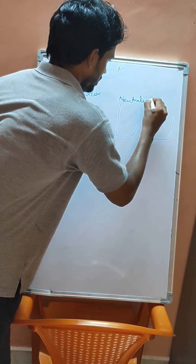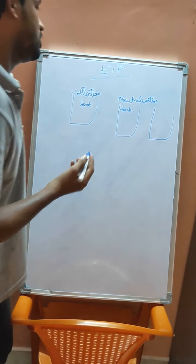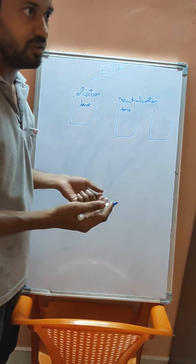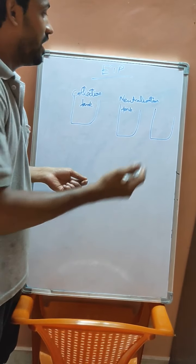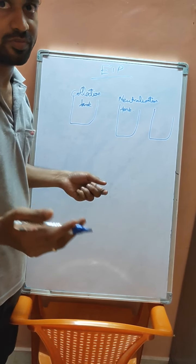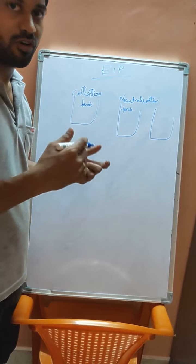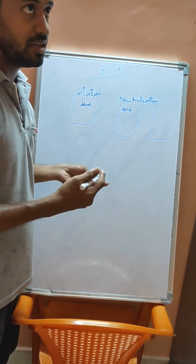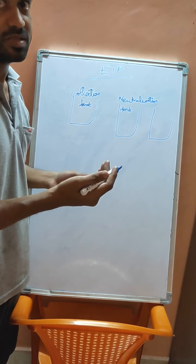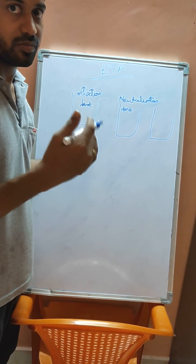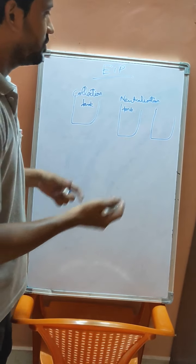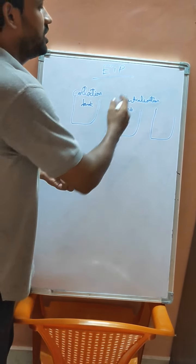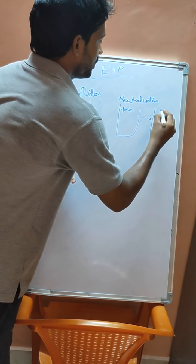From the collection tank, the effluent goes to the neutralization tank. The neutralization tank is used because the plant effluent may be acidic or basic. We need to bring the pH to around 6 to 8.5. If the effluent is acidic, we add a basic compound like ammonia or another base. If the effluent is more basic, we add acid. The pH range should be around 6 to 8.5, not exactly 7.